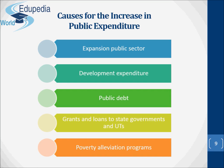Nine, grants and loans to state governments and duties. It is an important feature of public expenditure of the central government of India. The government provides assistance in the forms of grants-in-aid and loans to the states and to the duties. Finally, poverty alleviation programs. As the poverty ratio is high, huge amounts of expenditure are required for implementing alleviation programs.